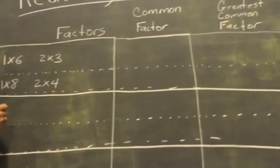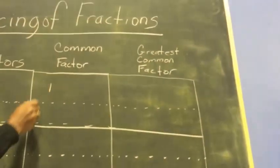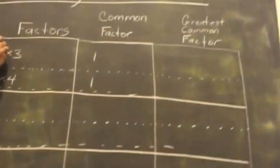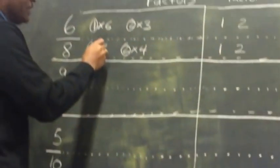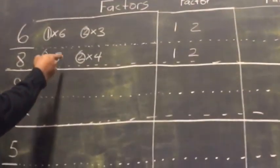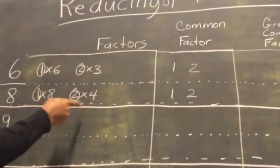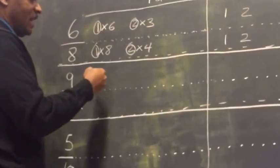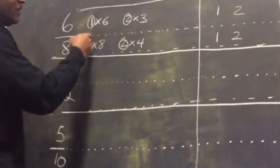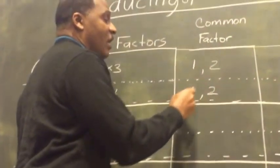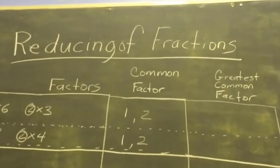I made a little broken line here to show you the difference between the 6 and the 8. The 1 is the same — so let's circle the 1. That's a common factor, so let's put 1 down as a common factor. The 2 is also the same, so that's a common factor too. What about the 3? No, there are no 3s between 6 and 8. And the 4? No 4s either. So the two common factors between 6 and 8 are 1 and 2.